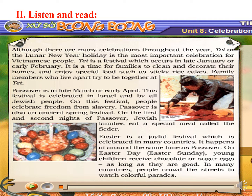Easter is a joyful festival which is celebrated in many countries. It happens at around the same time as Passover. On Easter Day — Easter Sunday — young children receive chocolate or sugar eggs as long as they are good. In many countries, people crowd the streets to watch colorful parades.